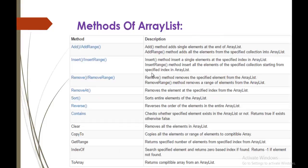The methods of ArrayList include: Add — to add an element; Insert — to insert an element at a specific position; Remove — to remove an element; Sort, Reverse, Clear, CopyTo, GetRange, IndexOf, and ToArray. These are some of the key methods present in ArrayList. Without wasting time, let us code and use some of these methods.